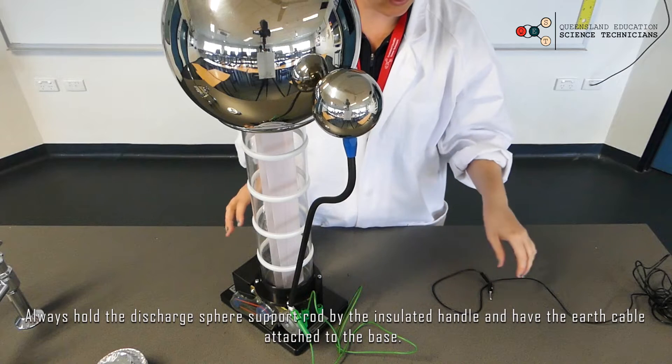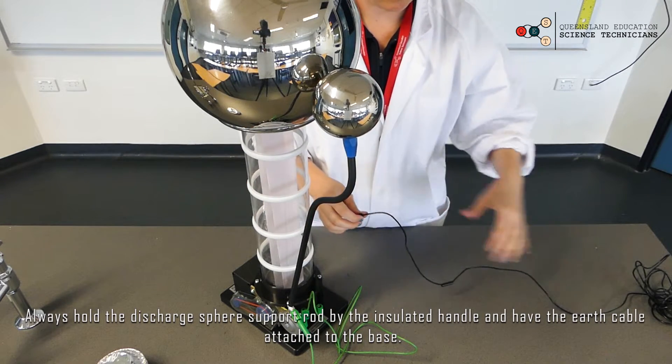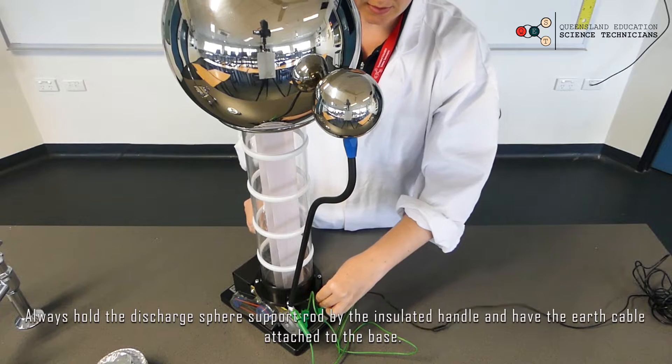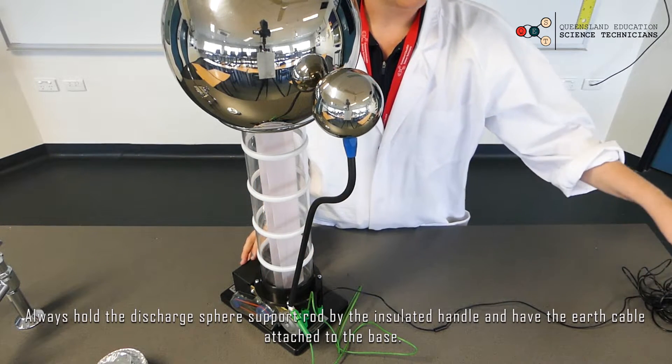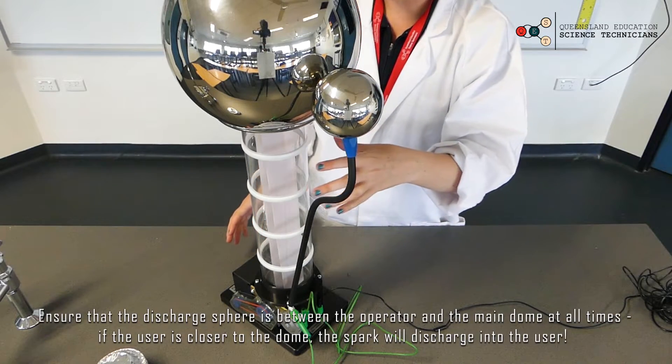Now this model also has an extra feature which is an extra earthing lead so that just needs to be attached to the base as well and then I have attached the other end of this lead to an eyewash station over this side of the bench.